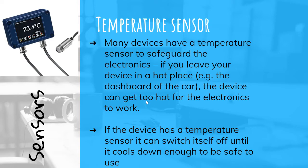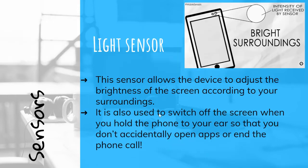If you leave your device in a hot place, the device can get too hot for the electronics to work. The temperature sensor allows the device to switch itself off until it cools down enough to be safe to use. Light sensor: This sensor allows the device to adjust the brightness of the screen according to your surroundings.